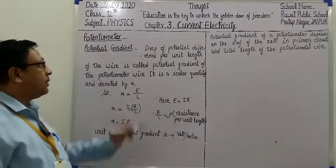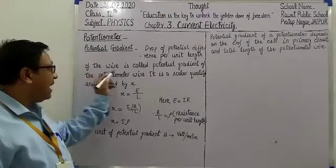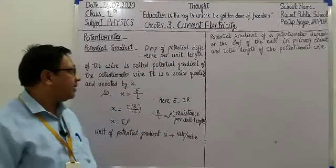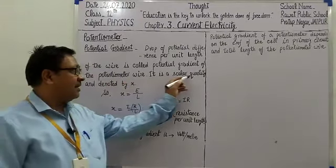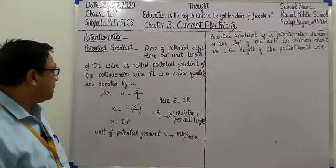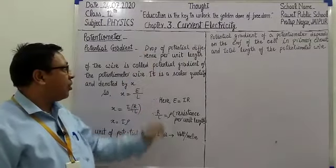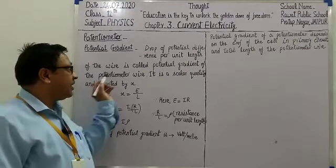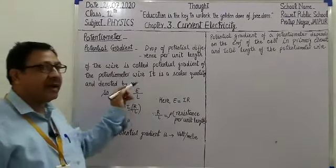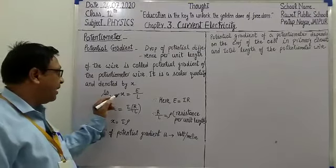Next topic: Potential Gradient. The drop of potential difference per unit length of the wire is called the potential gradient of the potentiometer wire. Potential gradient is a scalar quantity, denoted by small x. That is, per unit length, the potential difference that drops on the potentiometer wire is called potential gradient.